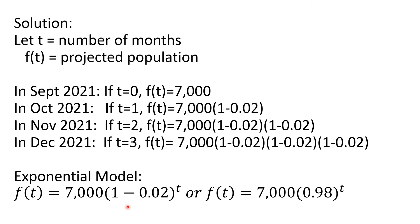In short, the exponential model for this problem is the projected population F of T is equal to 7,000, that is a constant, multiplied by 1 minus 0.02 raised to the T power. This is determined by the value of T. Or, since we can get the difference between these two, this can be rewritten as F of T equals 7,000 times 0.98 raised to the T.